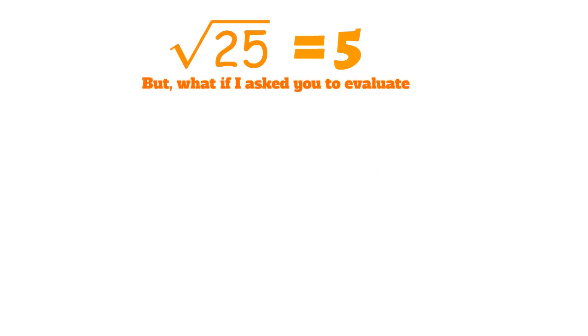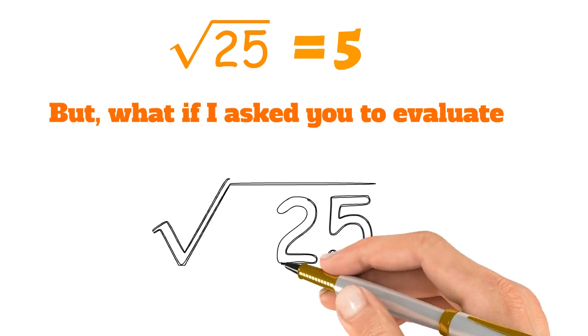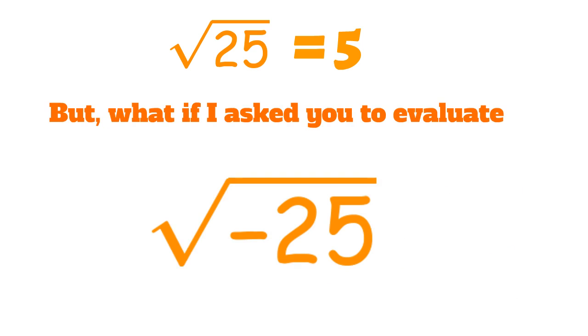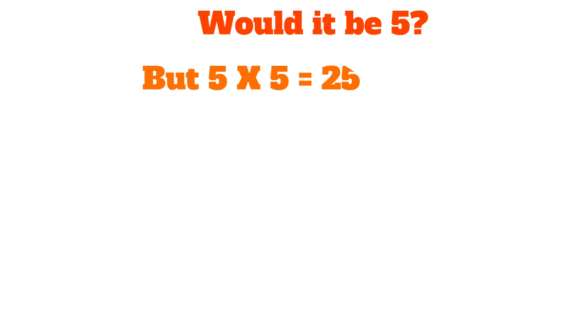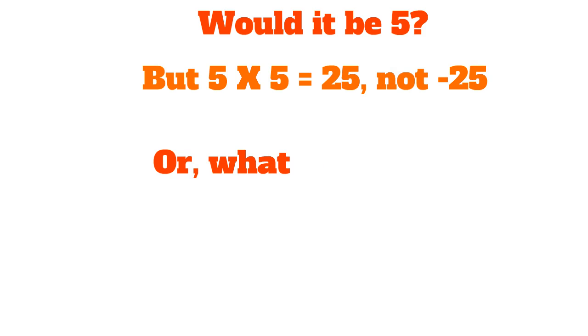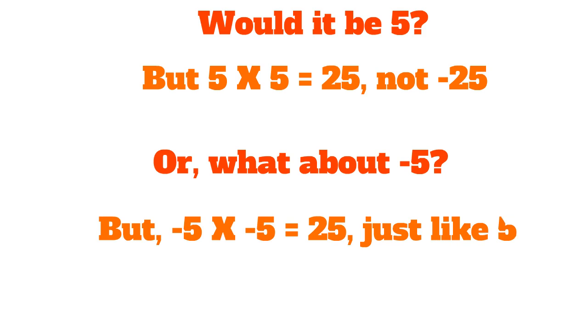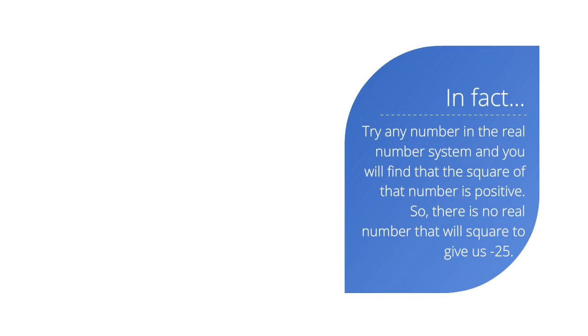But what if I asked you to evaluate the square root of negative 25? Would it be 5? But 5 times 5 is equal to 25, not negative 25, so it can't be 5. Or what about negative 5? But negative 5 times negative 5 is also equal to 25, just like 5. In fact, try any number in the real number system and you will find that the square of that number is positive. So there is no real number that will square to give us negative 25.